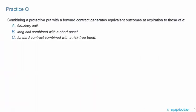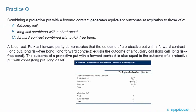We're going to do one practice question to finish this LOS. The language is a little bit tricky, so pay attention. The question is: combining a protective put with a forward contract generates equivalent outcomes at expiration to those of A, a fiduciary call; B, a long call combined with a short asset; or C, a forward contract combined with a risk-free bond. This question relates to Exhibit 18 — a protective put with a forward contract versus the fiduciary call — and the answer is A, a fiduciary call.